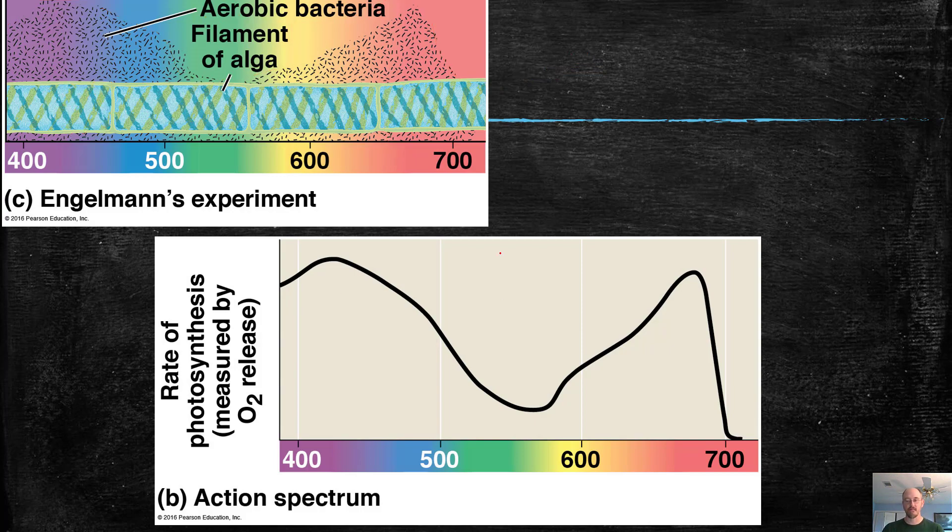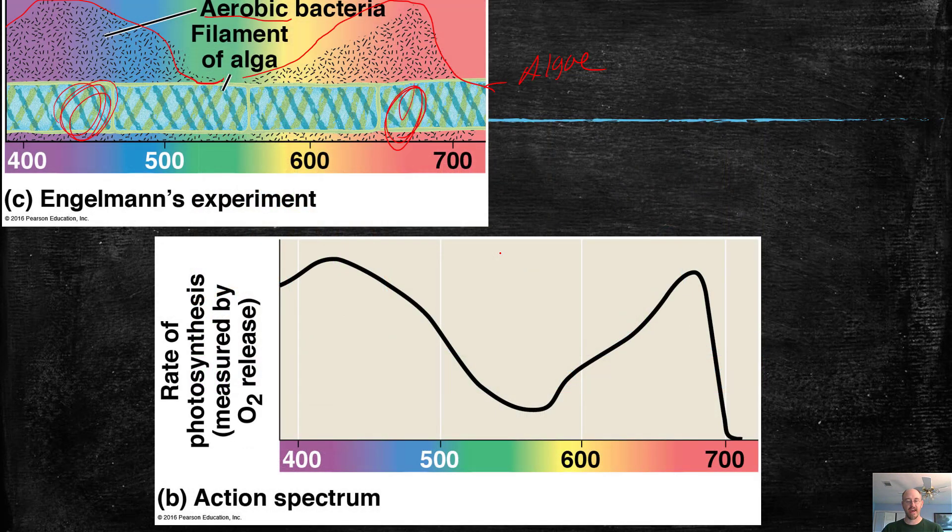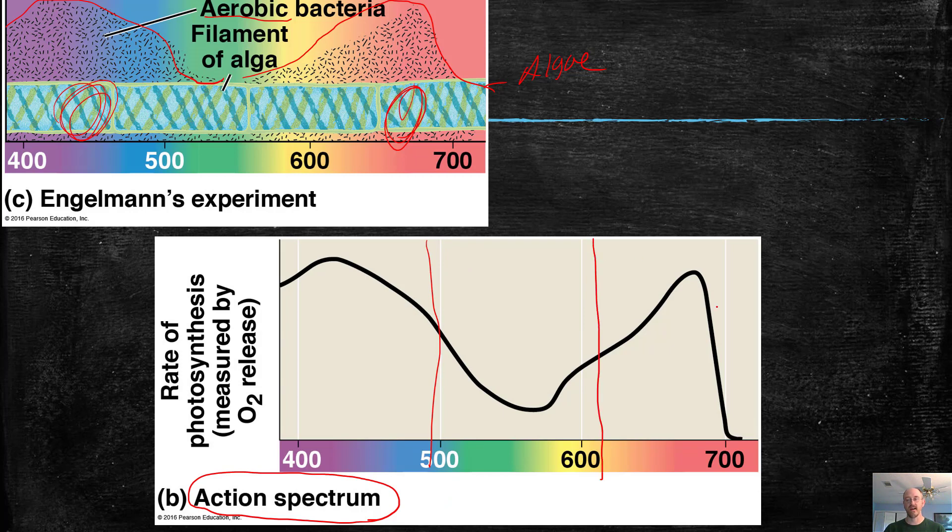So basically what this graph is on the bottom is an average of this graph all put together. This is called the action spectrum of photosynthesis, meaning what wavelengths of light are most used by photosynthesis to do action, to make food.